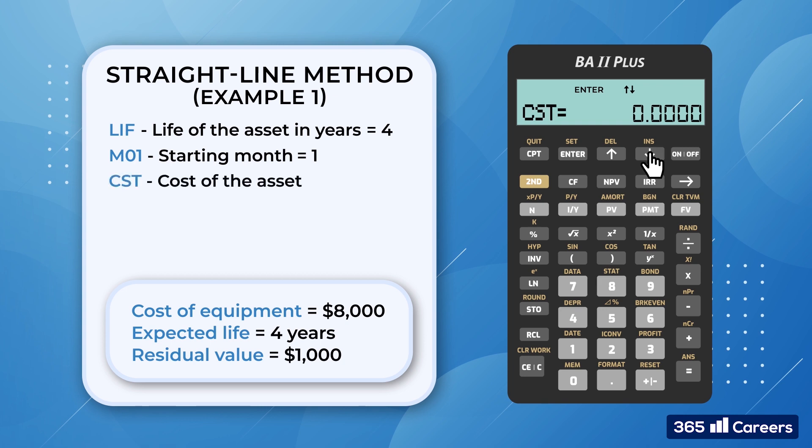The next term is CST, which represents the asset's cost. In our case, it's equal to $8,000. Then we input the salvage value, SAL. It is $1,000. Finally, the calculator asks us about the year for which it needs to compute the output. In our case, we would like to calculate the depreciation expense and net book value in year 3, so we enter 3.